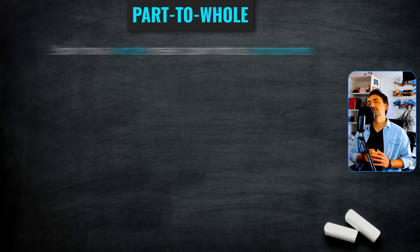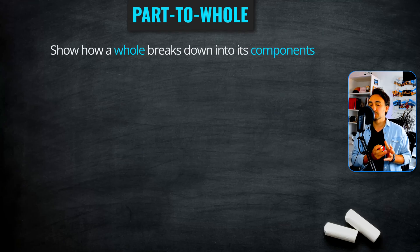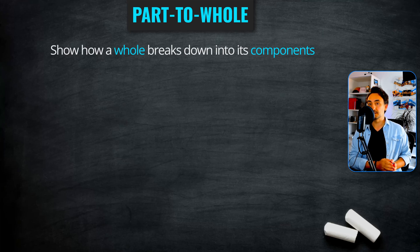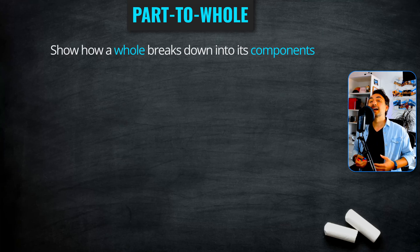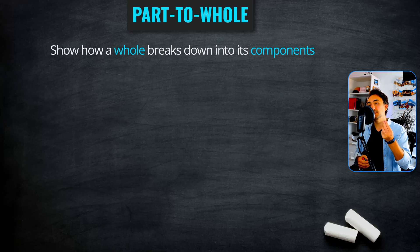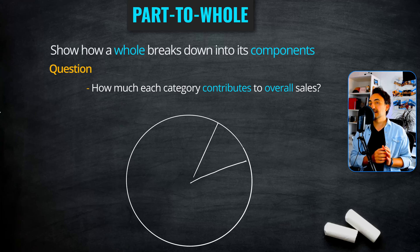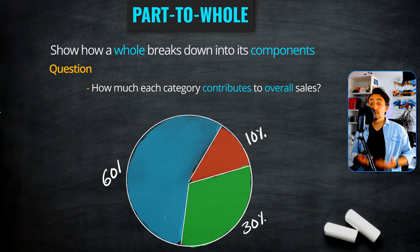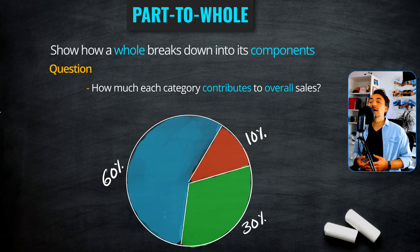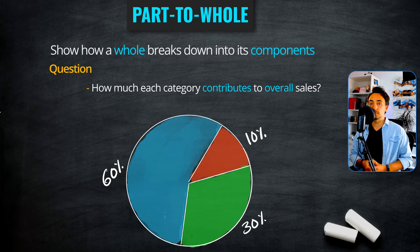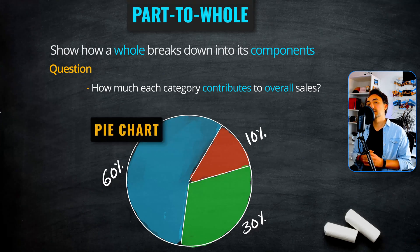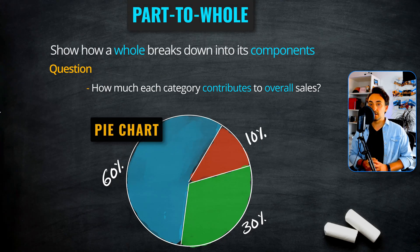Now we have the part to whole category. It shows how a whole or value breaks down into its components and how each component contributes to the total. If you have a question like how does a value contribute to the total, then we're talking about the part to whole category. The best chart to visualize the answer is the pie chart, because visually it's very easy and effective to show how each slice contributes to the whole pie.